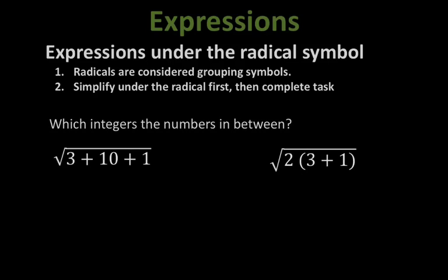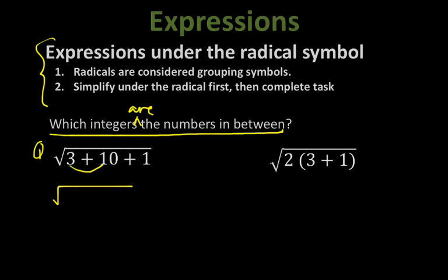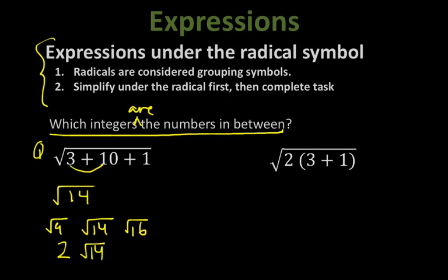Now we have something a little different: expressions under the radical symbol. Radicals are considered grouping symbols — simplify under the radical first, then complete the task. The question asks which integers the number is between. For example 1, simplify underneath: 3 plus 10 is 13, plus 1 is 14. Square root of 14 is going to be between square root of 9 and square root of 16, so it's going to be between 3 and 4.